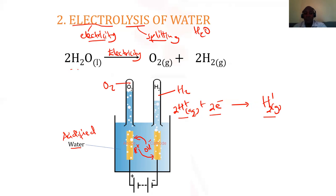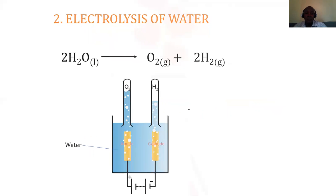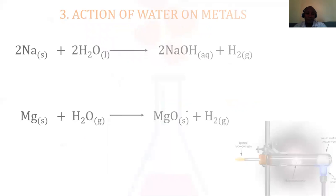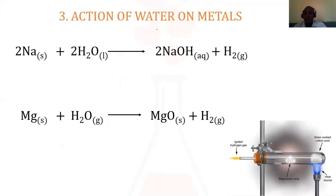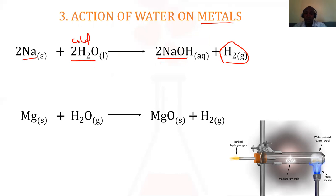At the cathode we collect hydrogen gas, while at the other side we collect oxygen gas. This is another way of preparing hydrogen from water by electrolysis. Lastly, we have the action of water on metals. Most metals react with water; for example, sodium reacts violently with cold water to produce hydrogen gas, leaving behind sodium hydroxide solution, which turns red litmus paper blue.